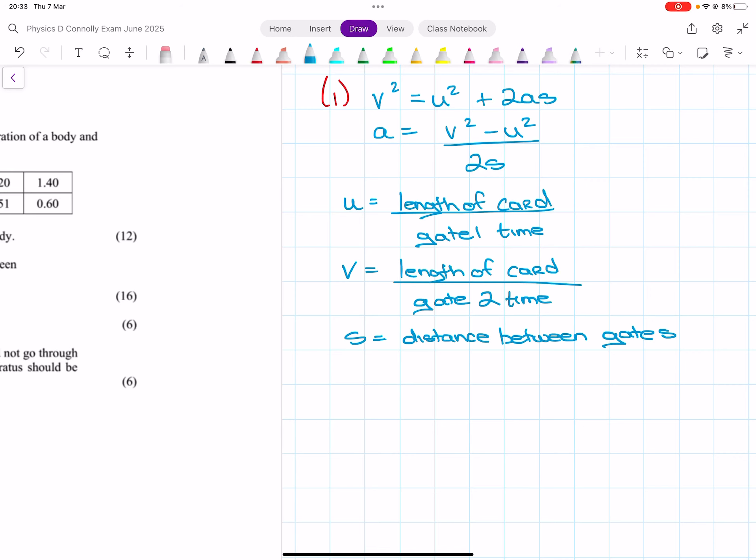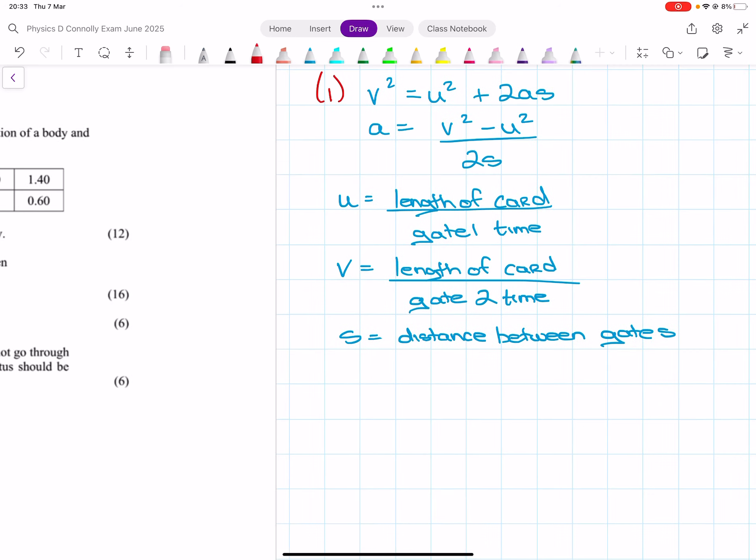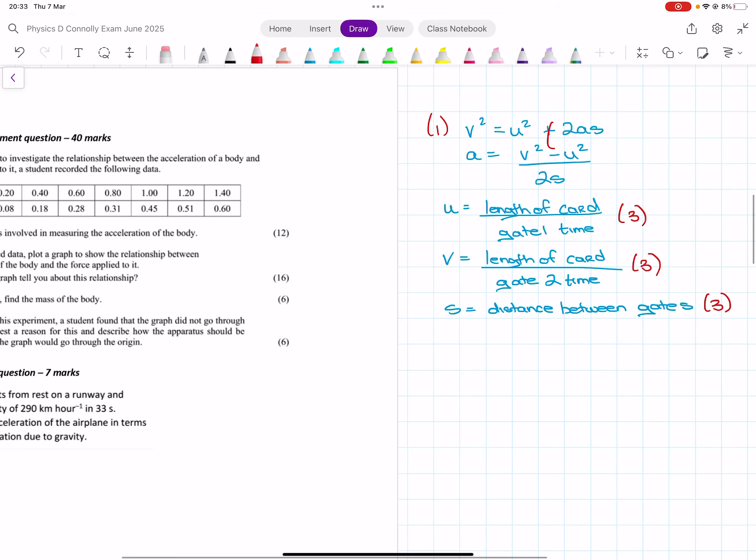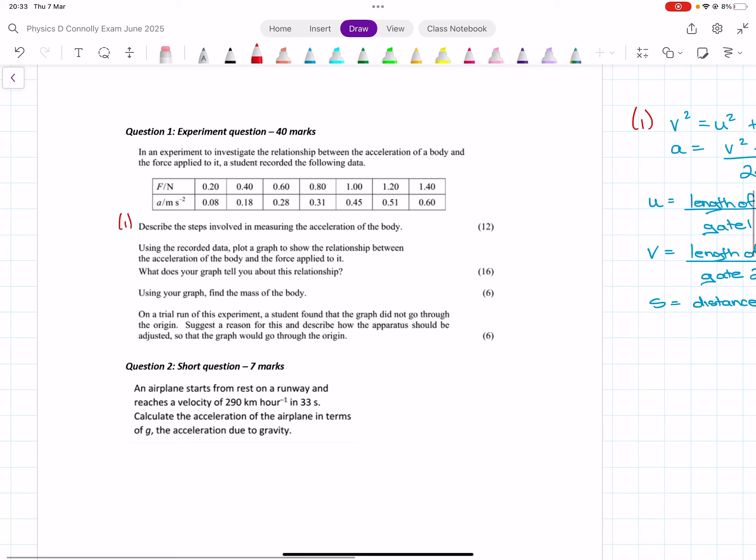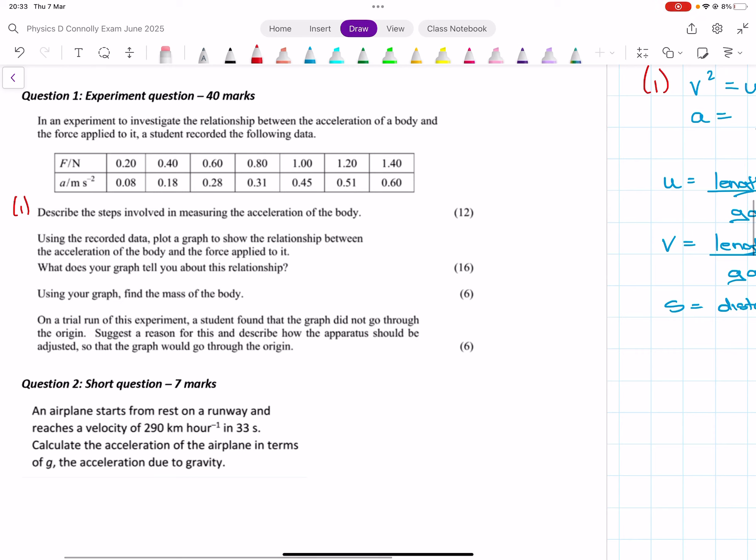v is the length of card divided by the gate 2 time. And then s is the distance between the gates. And it's 12 marks. Literally, it's 3, 3, 3. Use the recorded data to plot a graph to show the relationship between the acceleration of a body and the force applied to it. Now, this is f is proportional to a. So, the formula that governs that is f equals ma.